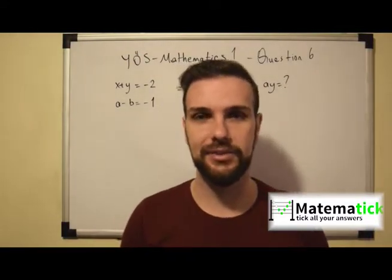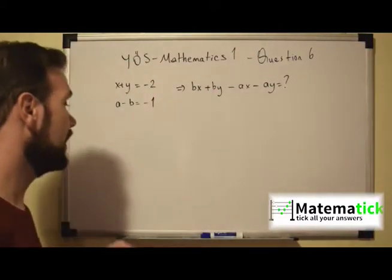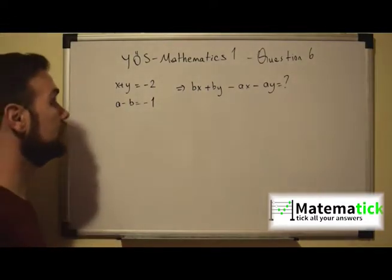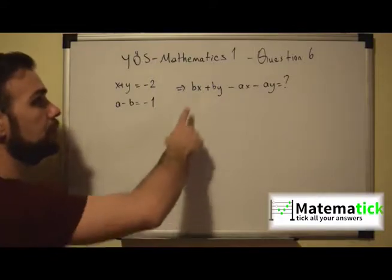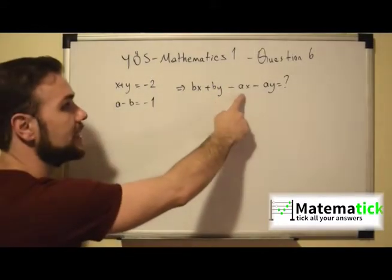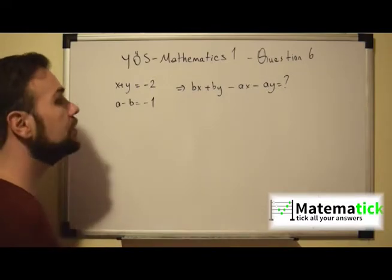In this question we have x plus y equals minus 2, a minus b equals minus 1, and we are asked bx plus by minus ax minus ay. What do we do in these kinds of questions?